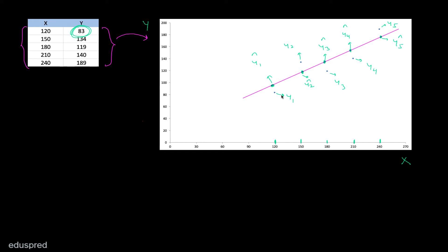As per the intuition we developed earlier, we are trying to fit this line in such a manner that the difference between the actual values and the fitted values is as minimum as possible. The difference between Y1 and Y1 hat is called U1 hat. Similarly, the difference between Y2 and Y2 hat is U2 hat. The differences U3 hat, U4 hat, and U5 hat follow the same pattern. So basically, we are trying to fit our line such that these sample errors are as minimum as possible.